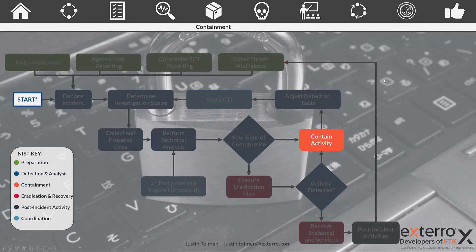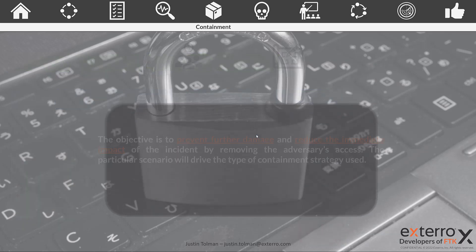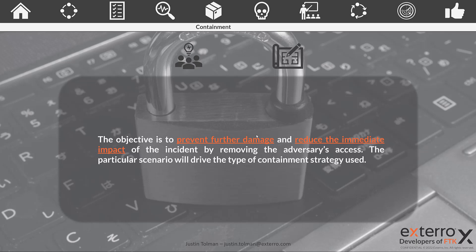We have our playbook here with only the contain activity highlighted. Containment is part of detection and analysis, but it is maybe one of the most, if not the most, important part of this whole thing. So while this section is small, it is not one to be ignored. The objective of the containment phase is to stop the spread of damage and to reduce the risk and the data loss that is happening or potentially going to happen within your network.